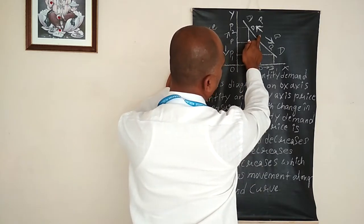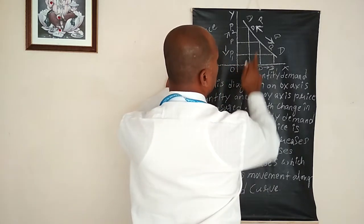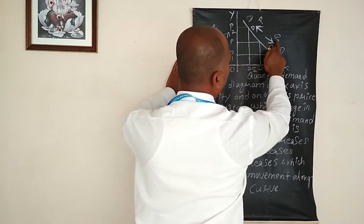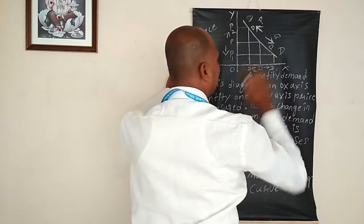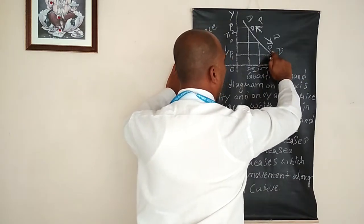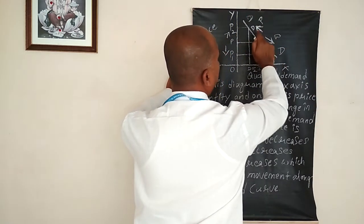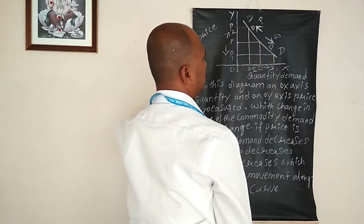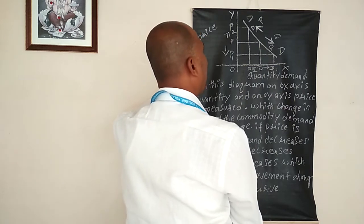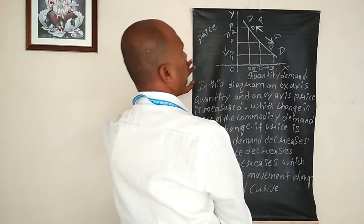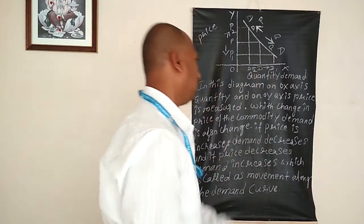Observe that the arrow marks are moving in opposite directions — a negative direction. Suppose price is more, demand is less: price moves upward, demand moves downward. On the other hand, price moving downward means demand is more: the demand arrow moves upward. There is an opposite relationship. So the changes in the price of a commodity lead to movement along the demand curve.